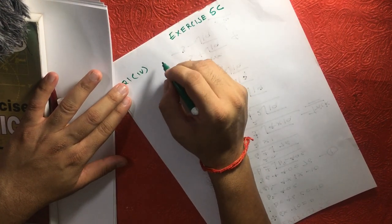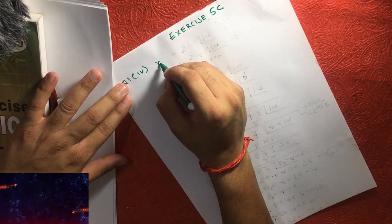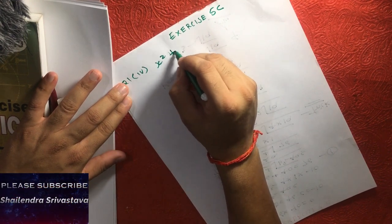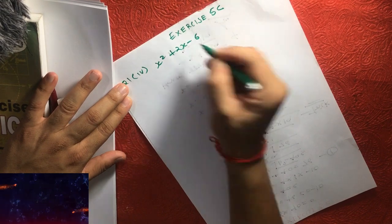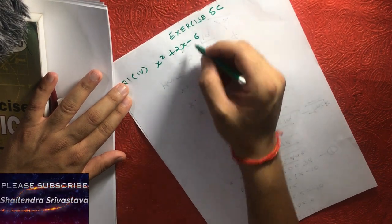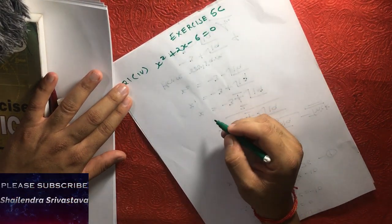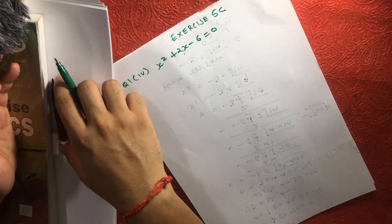I am going to solve the fourth part. The equation is x squared plus 2x minus 6. We need to solve this equation equals 0. So let's see how we can solve this.